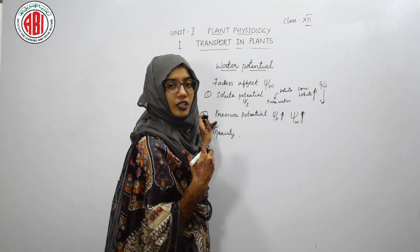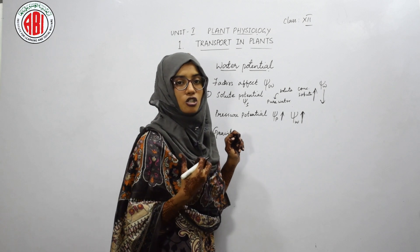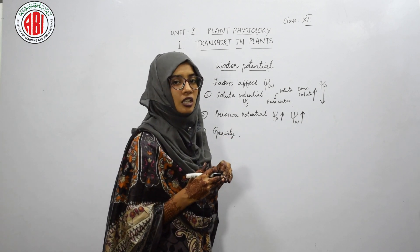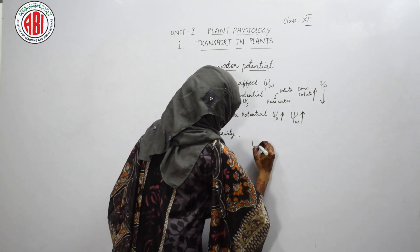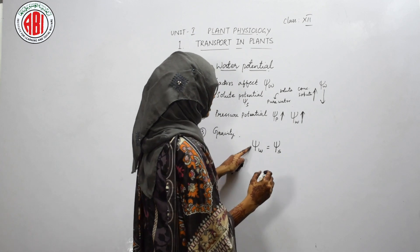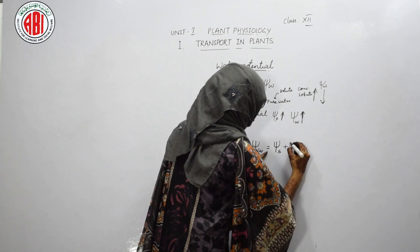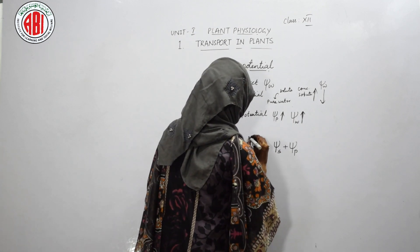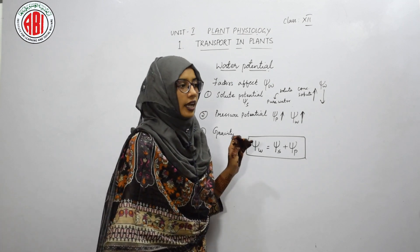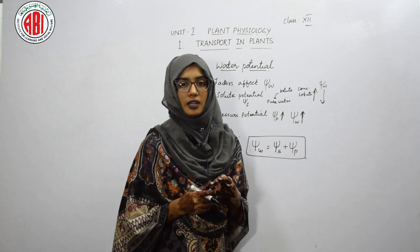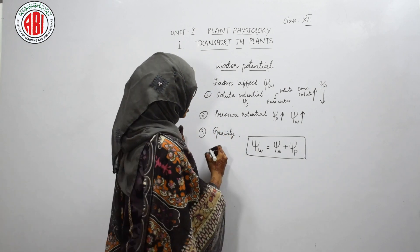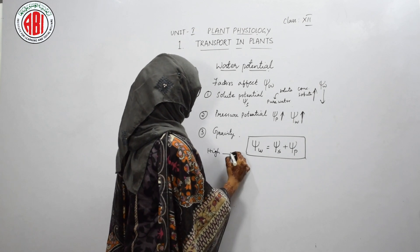Using these factors, we can show a relation to calculate water potential: ψw = ψs + ψp. This equation is used to calculate water potential. One important thing to remember is that water always moves from a region of high water potential to low water potential.